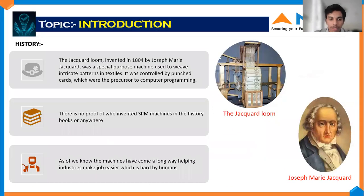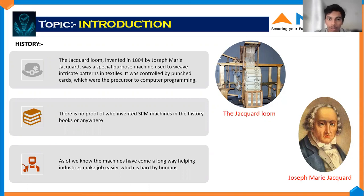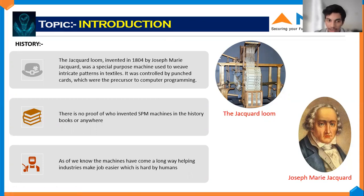Let us go back to the history. The Jacquard Loom, which was invented by Joseph Marie Jacquard in 1804, was a special purpose machine used to weave intricate patterns in textiles, controlled by punch cards without requiring computer programming. There is no definitive proof that Jacquard invented the SPM concept, but it was the first such machine to emerge in industry. As we know, machines have come a long way, helping industries make jobs easier that are hard for humans.